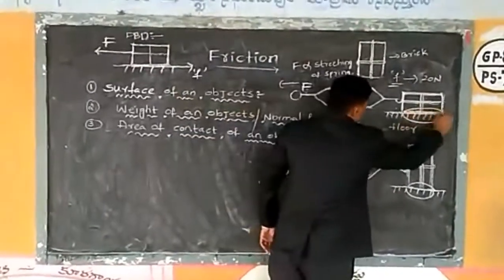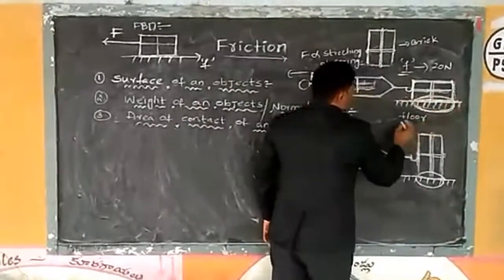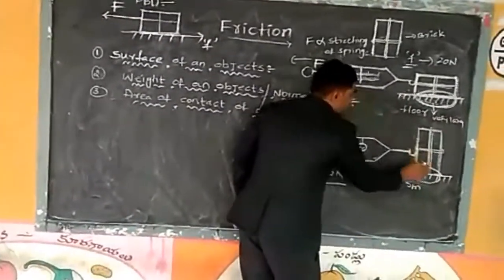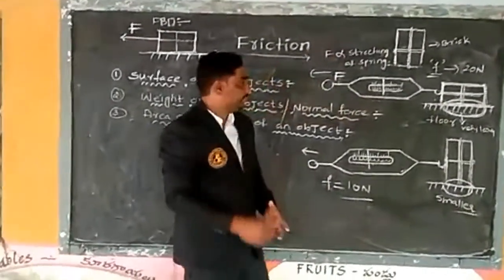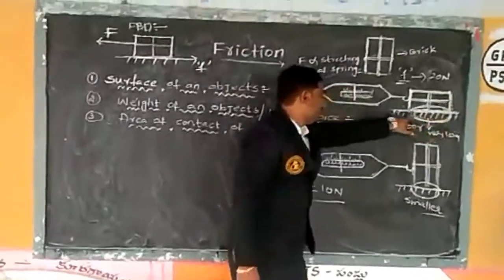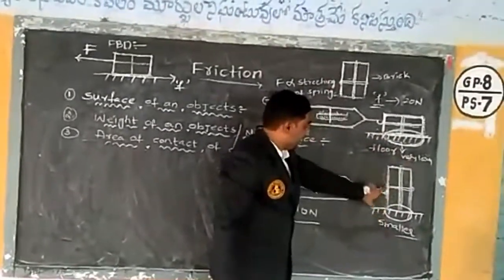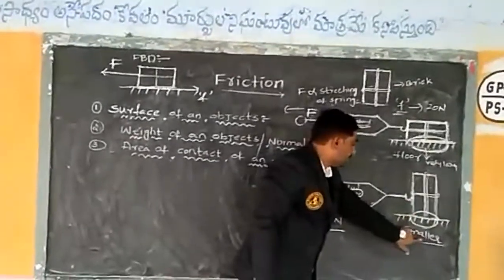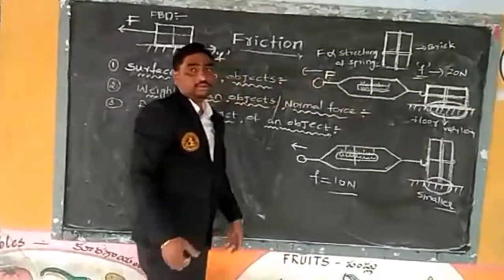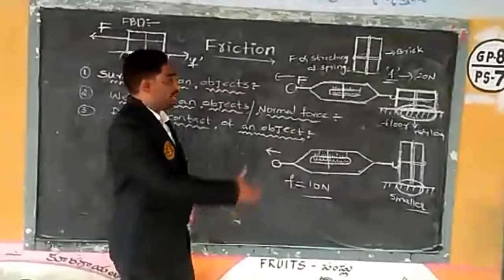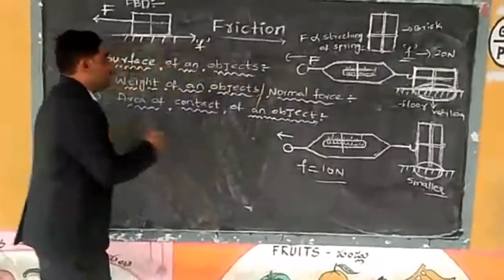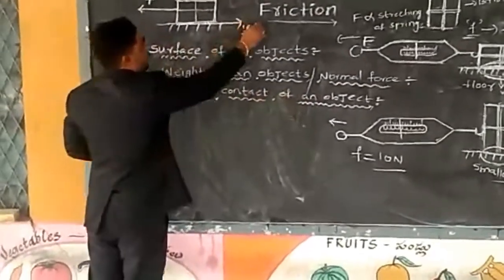Even though there is a change in the area of contact of the brick, the required frictional force we measured is the same — 10 newtons in both cases. From this, we can conclude that the area of contact of an object is independent of the rate of friction.